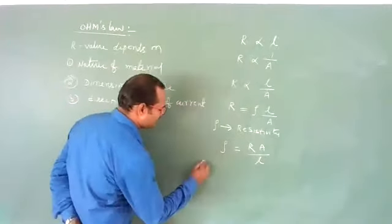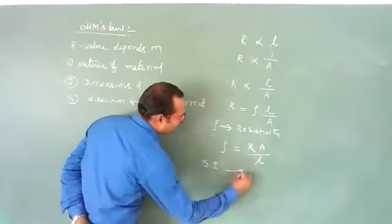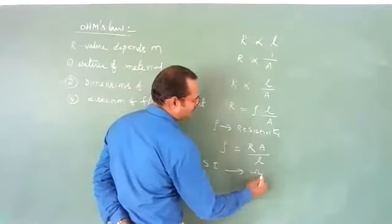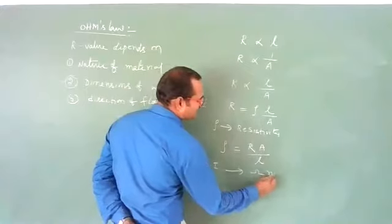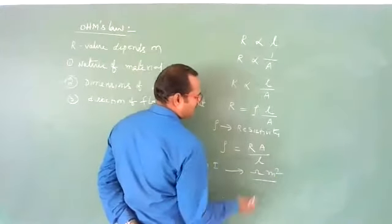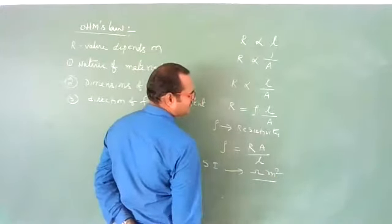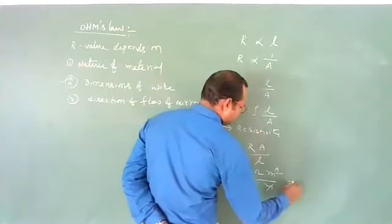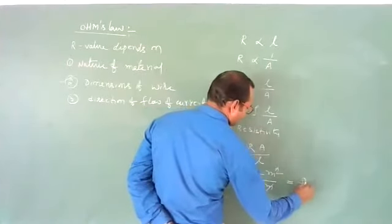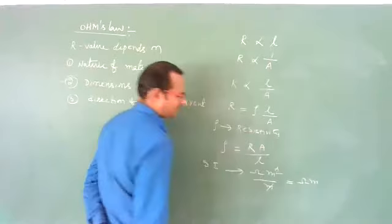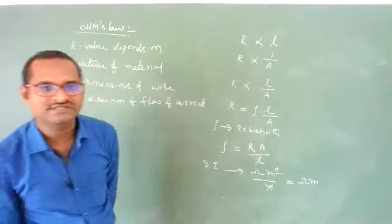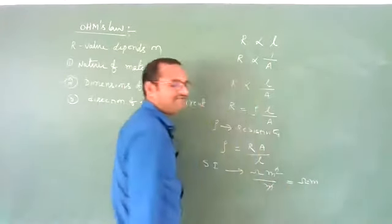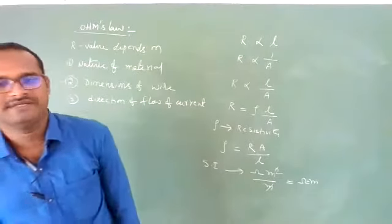The SI unit of resistivity is: ohm × meter²/meter = ohm·meter. So the SI unit of resistivity is ohm·meter.